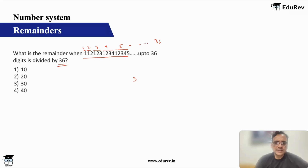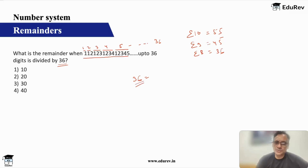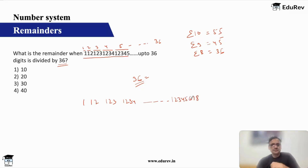Sum of 10 natural numbers is 55, sum of 9 is 45, and sum of 8 natural numbers is 45 minus 9 equals 36. So 36 is sum of 8 natural numbers. That means the pattern will go till the set containing 1 2 3 4 5 6 7 8 as the last set. This is my number — it's a continuous number getting divided by 36.